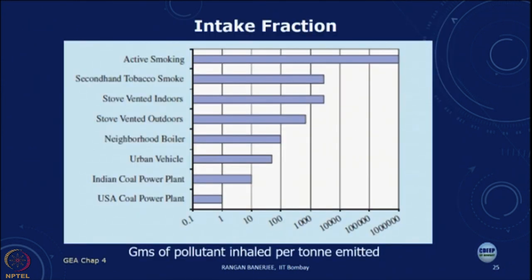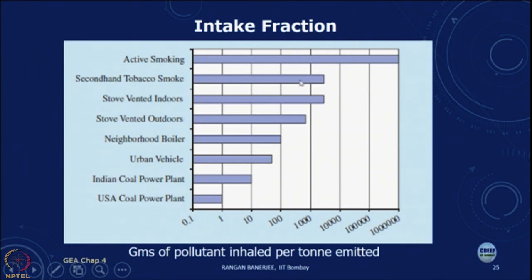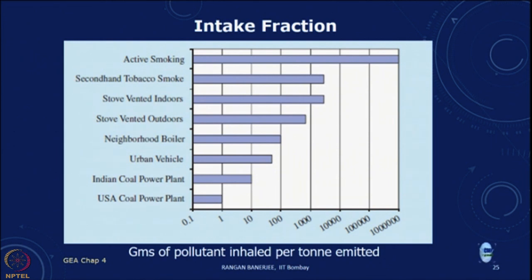The fraction of emissions taken in depends on the situation. Active smoking means nearly 100% of pollutants are inhaled. Second-hand smoke, an indoor vented stove, a boiler, a vehicle, or a coal-based power plant all represent progressively lower intake levels. We can look at all of these and use them in our models to quantify safe levels and health impacts.